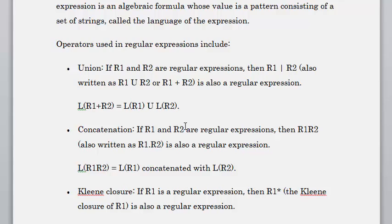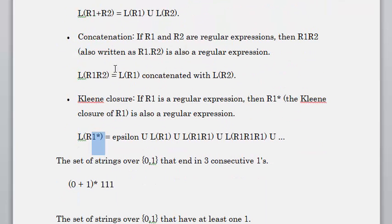The operators used in regular expressions are the union, concatenation, and Kleene closure. Kleene closure is represented by a star. Concatenation is just basic concatenation — for example, 'ab' is the concatenation of a and b. A star is a Kleene closure example, and union is a plus b, which means a or b. Union is the OR operation, concatenation is the AND operation, and Kleene closure means that expression could appear zero or more times.